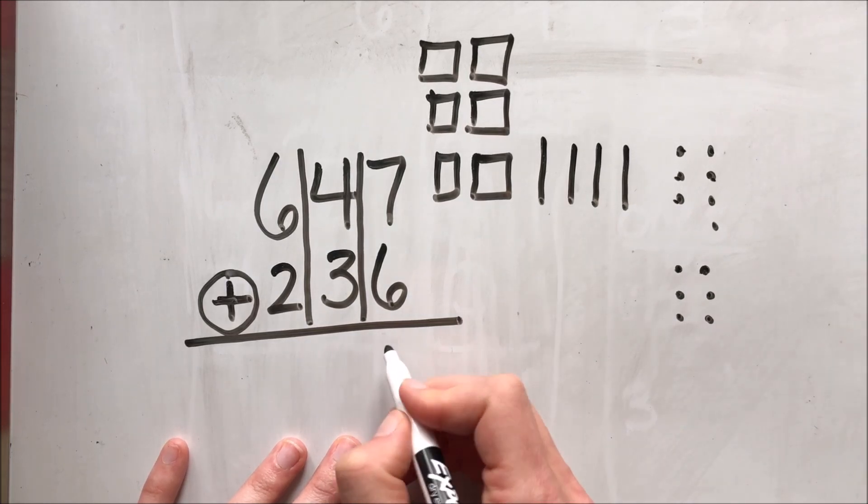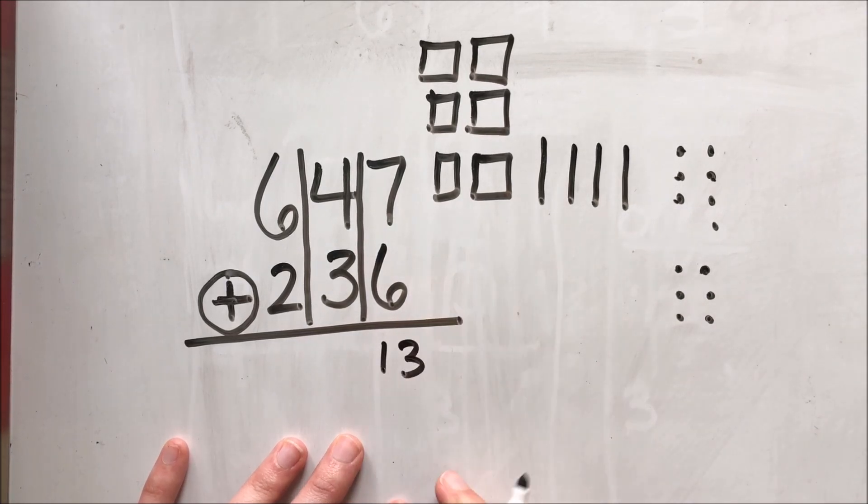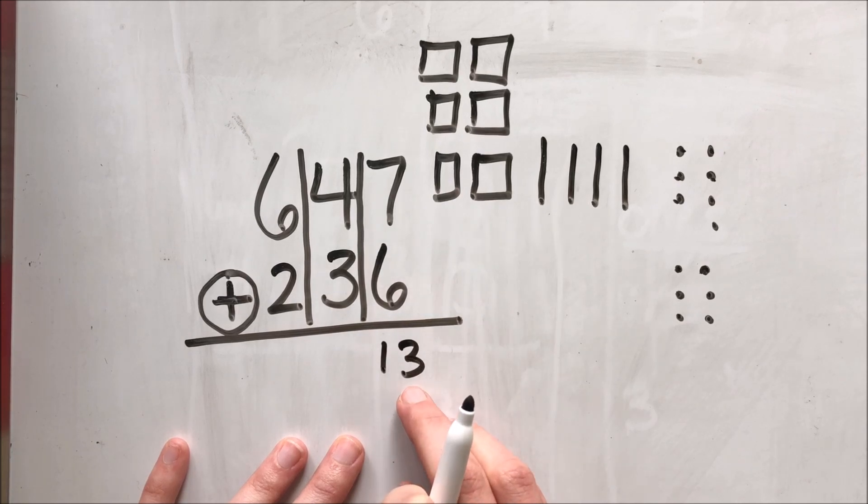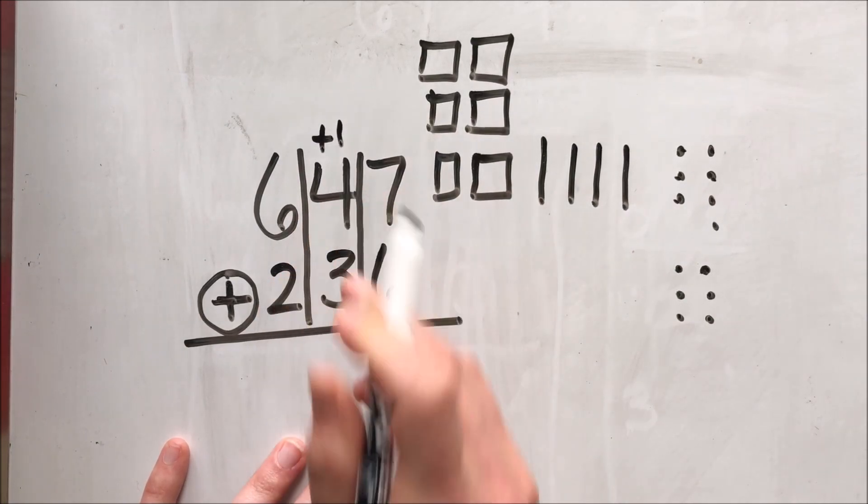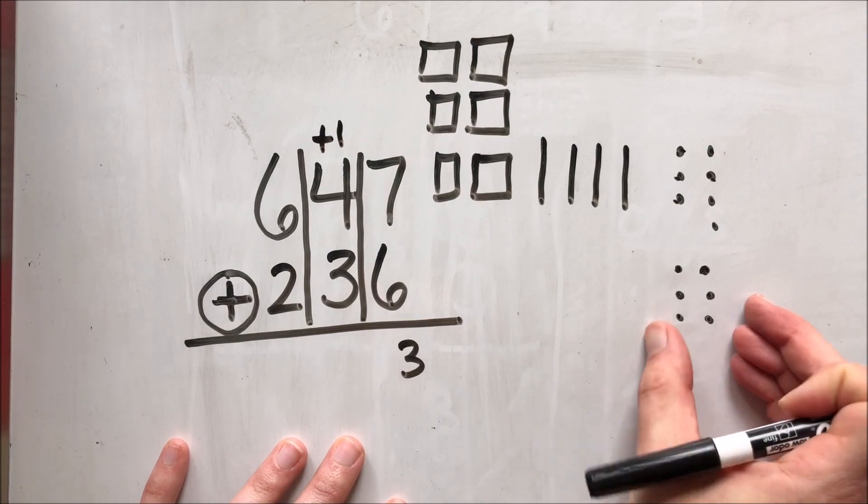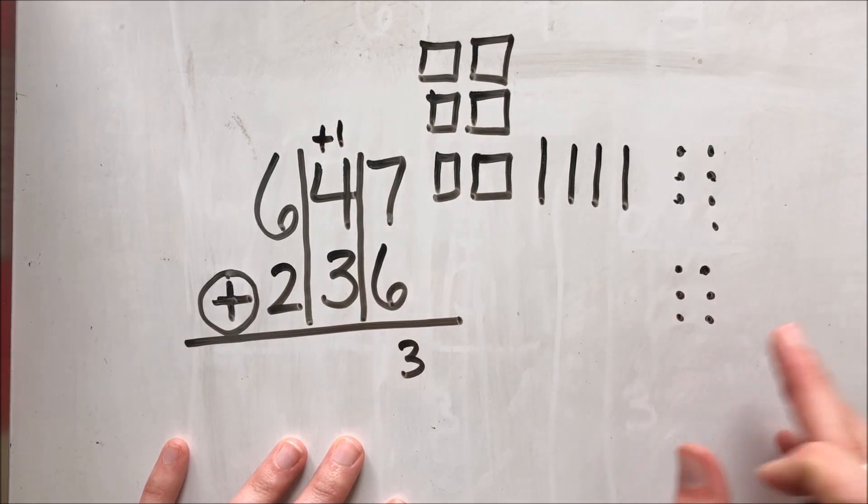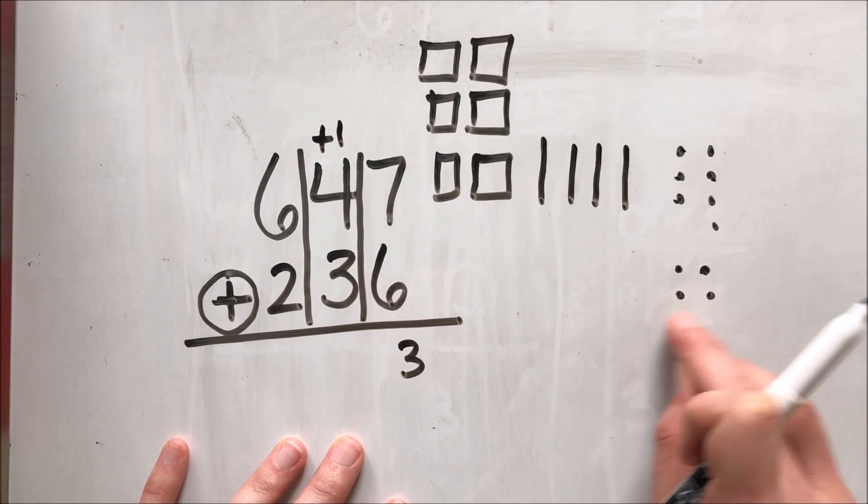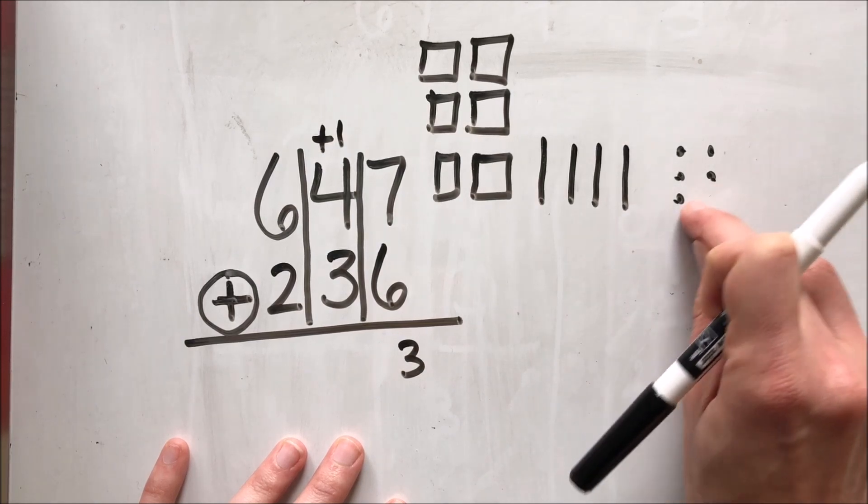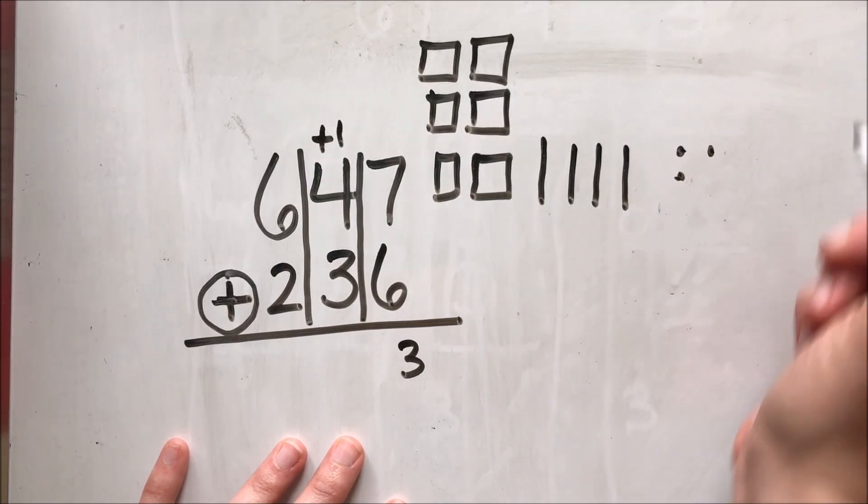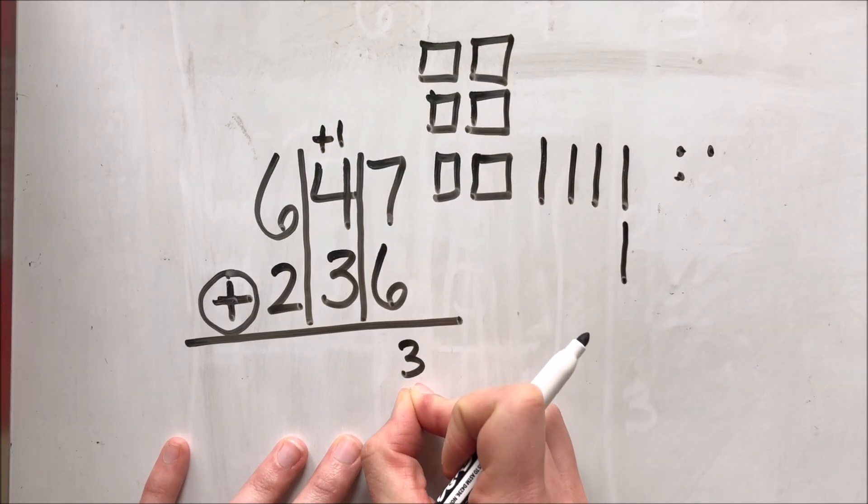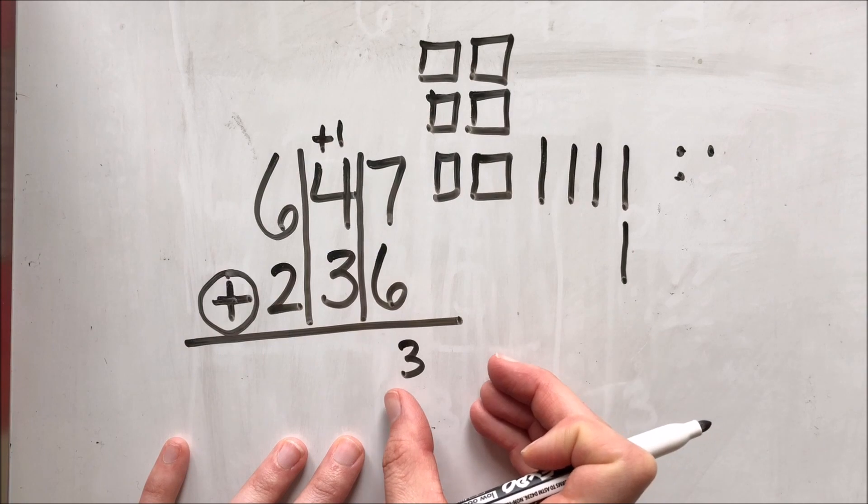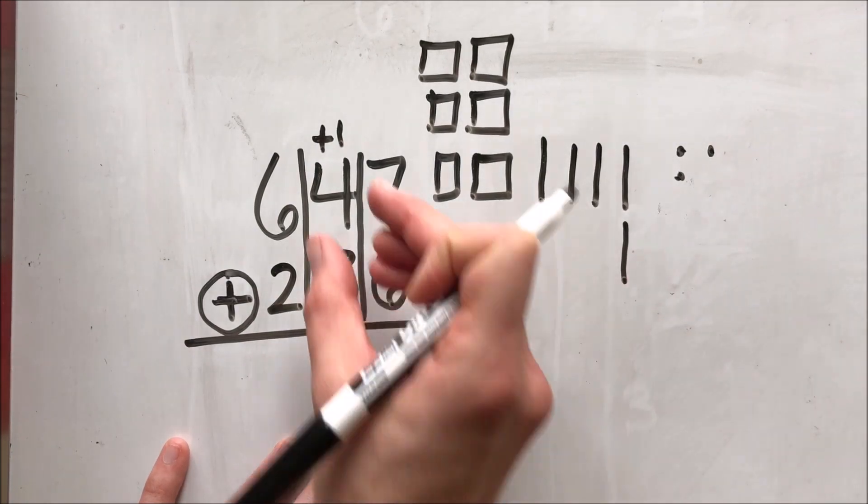And remember we can't have thirteen ones. I can't write a thirteen here. I can only have a digit nine or less here. So that's when we use that language of we can carry the one here. And what that really means over here with the ones is I'm taking ten of these ones, one, two, three, four, five, six, seven, eight, nine, ten, and I'm turning that into a tens block. That's what we mean when we say we're carrying the one or we are regrouping ten of those ones into a ten.